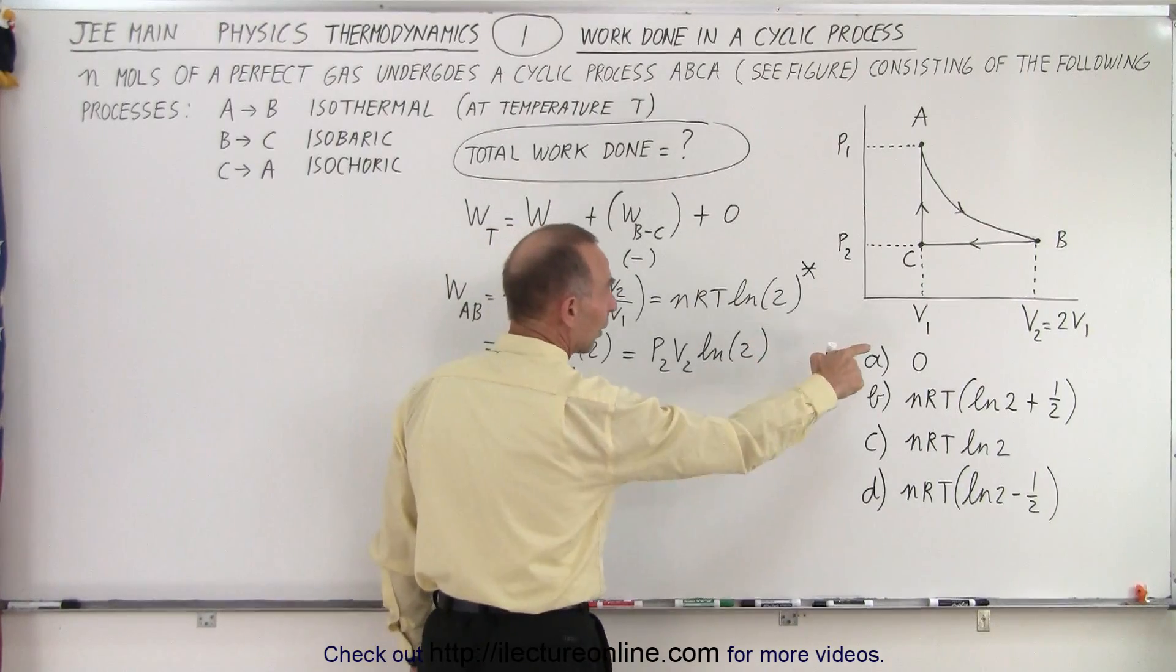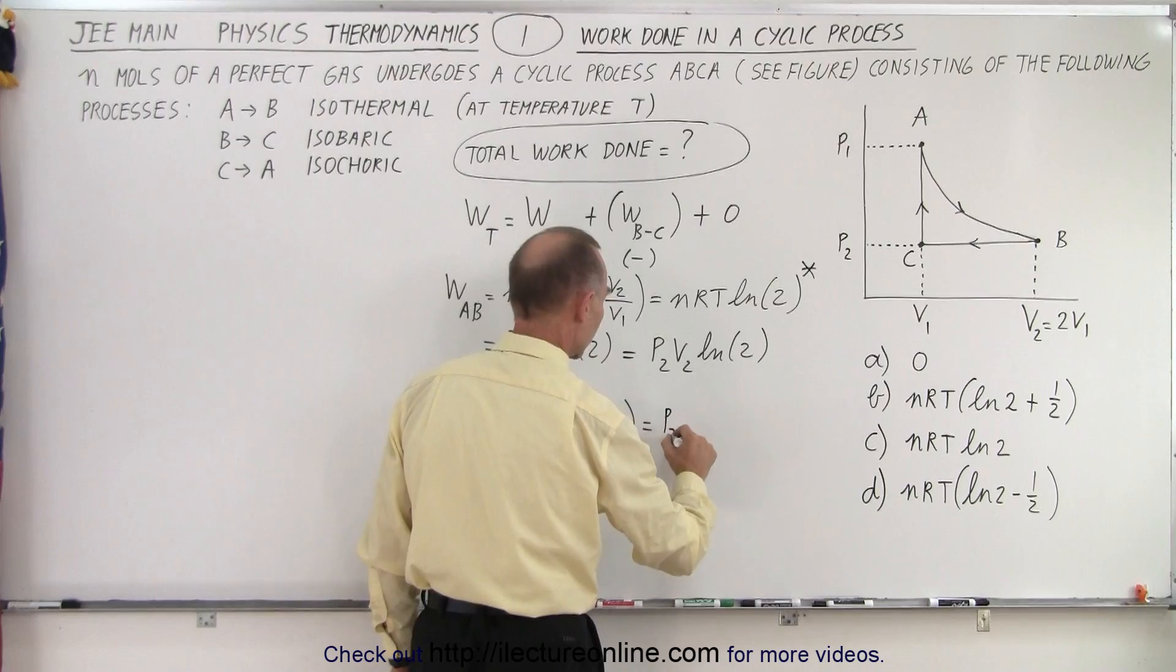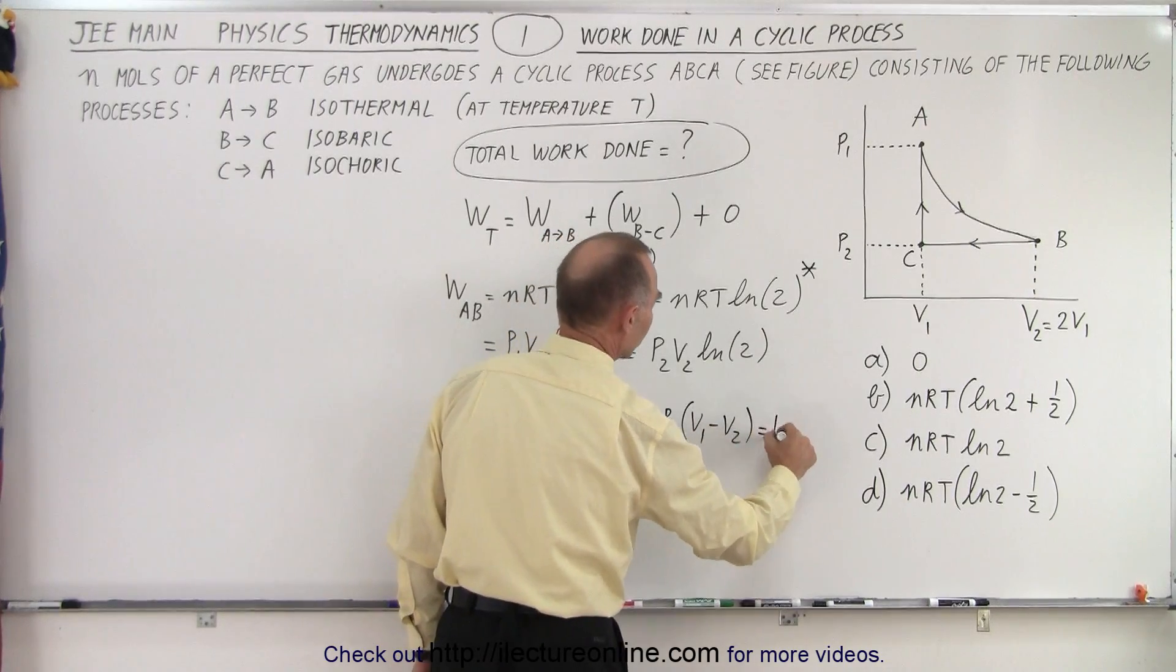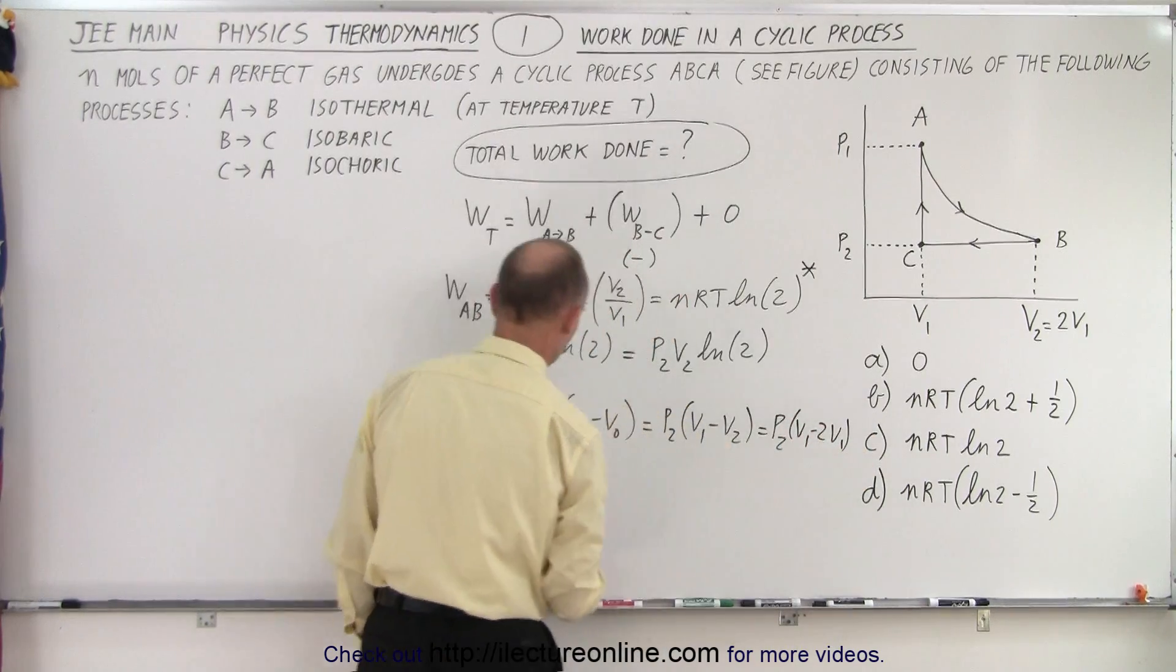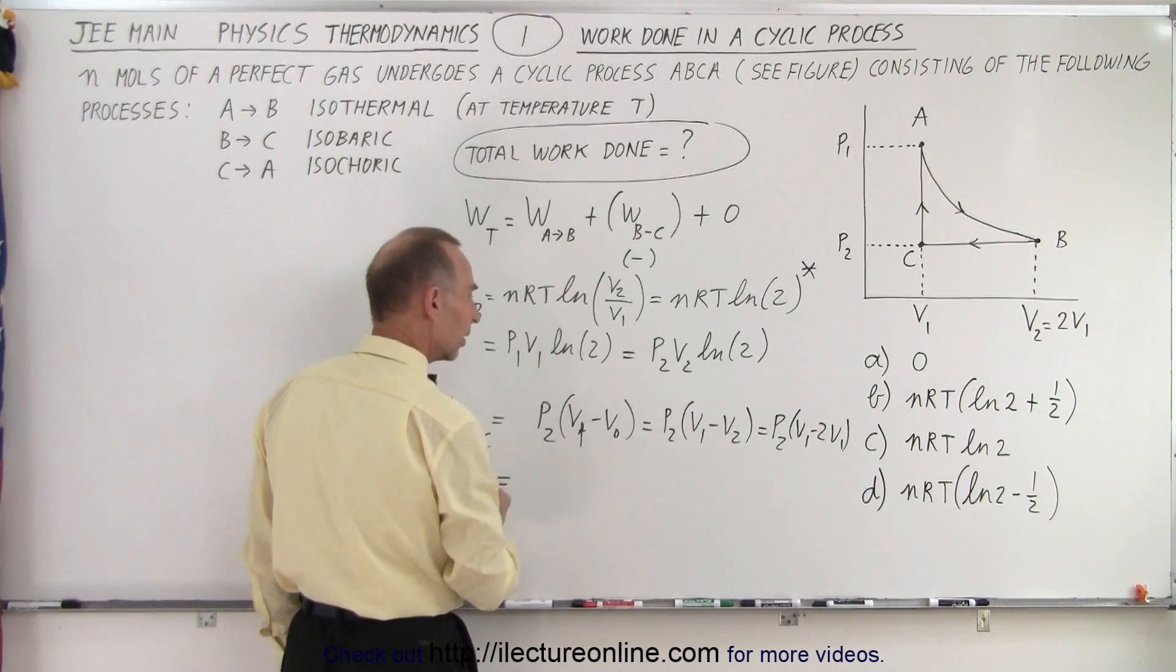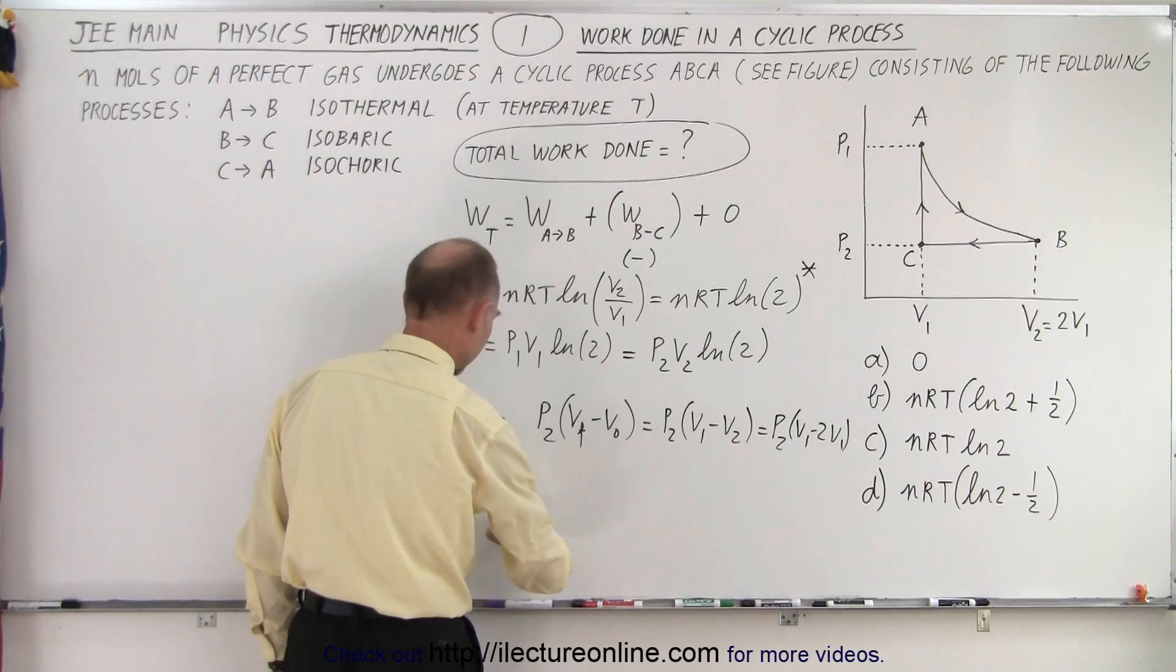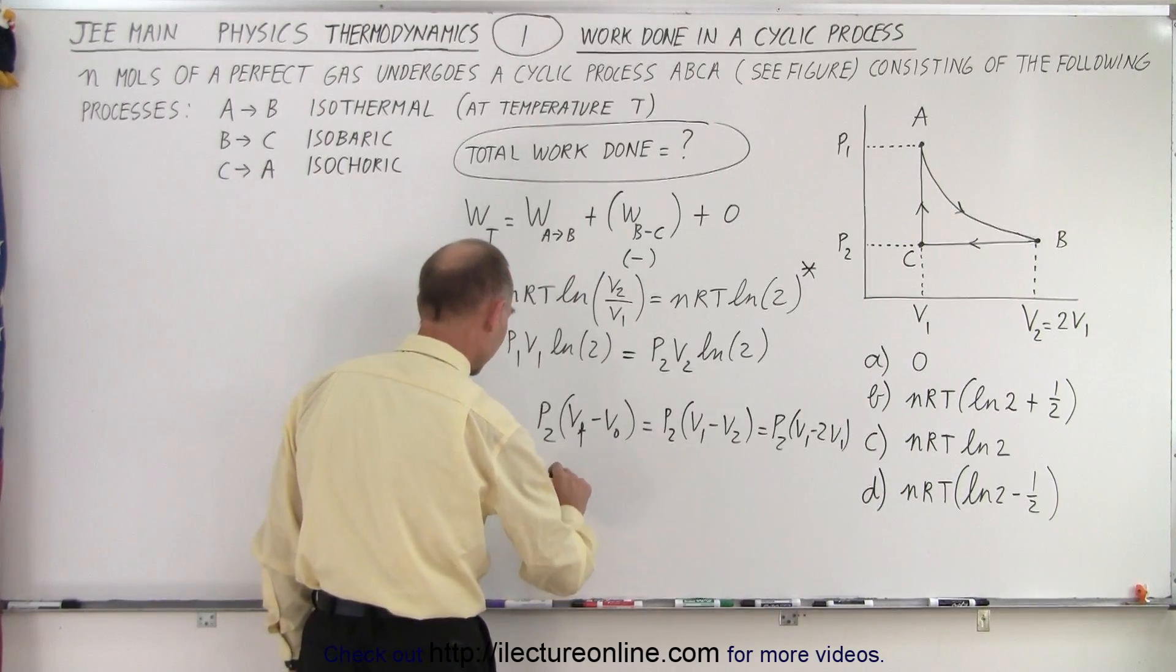Of course, V final is V1 and the initial is V2, so this would be P2 times V1 minus V2, which is equal to P2 times V1 minus 2V1. So in essence, the work done going from B to C is equal to negative P2V1.